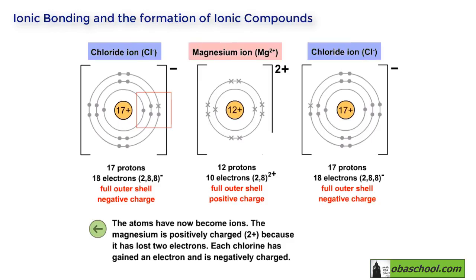The magnesium ion has a positive charge and the chloride ions have a negative charge. The magnesium is positively charged with a 2+ charge because it has lost two electrons. Each chlorine has gained an electron and is negatively charged.